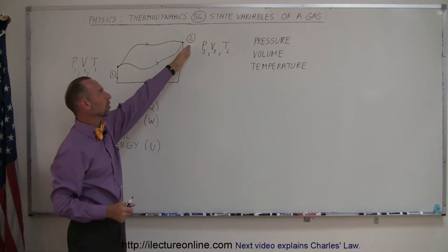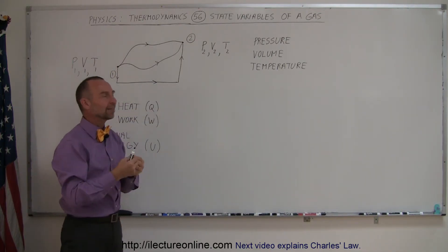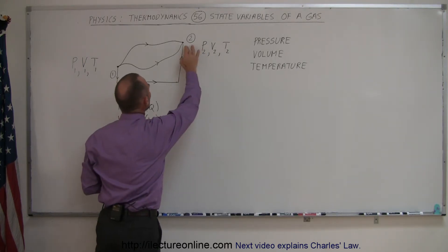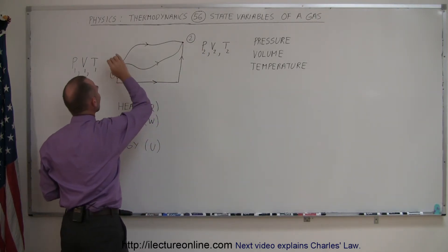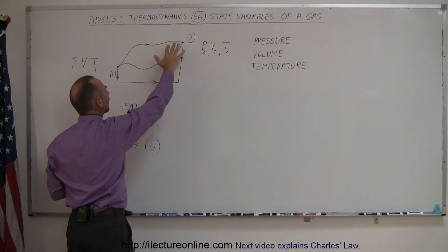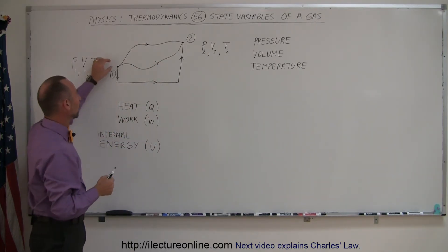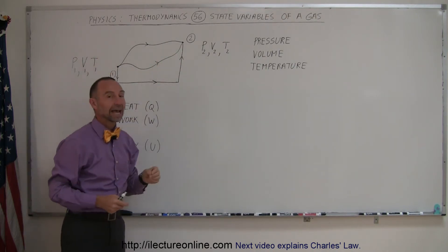And so once you've achieved this new state, once a gas is in this new state and has new values for pressure, volume and temperature, you really have no idea how it got from state 1 to state 2. It can go there in various ways. Different kinds of thermodynamic processes can occur to go from one state to another state of a gas.